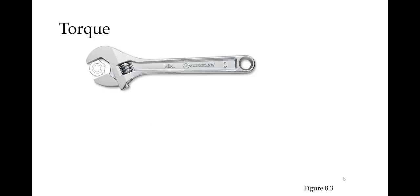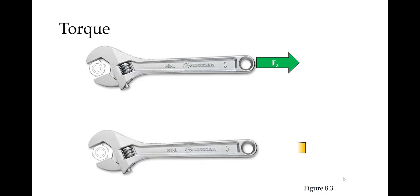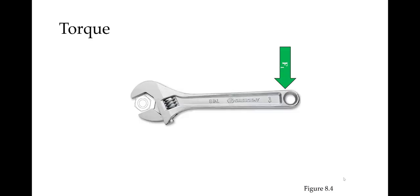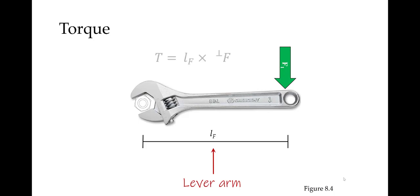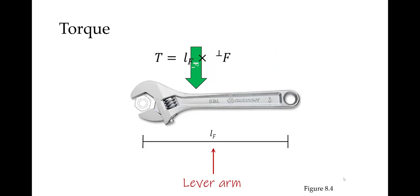A force that is applied through the axis of rotation will create no torque. If you pull on the wrench, or if you push on the wrench, it won't turn the bolt. The distance from the axis of rotation to the point of force application is known as the lever arm. The amount of torque is determined by the magnitude of the perpendicular force and the length of the lever arm.